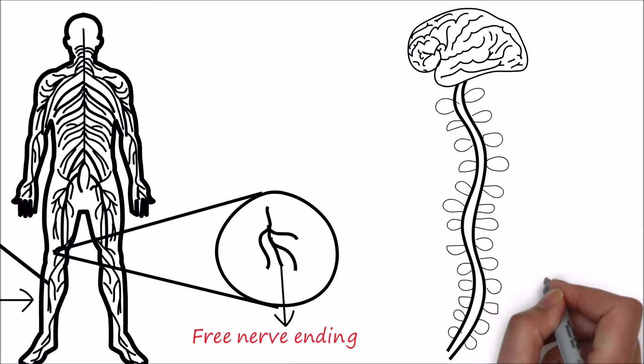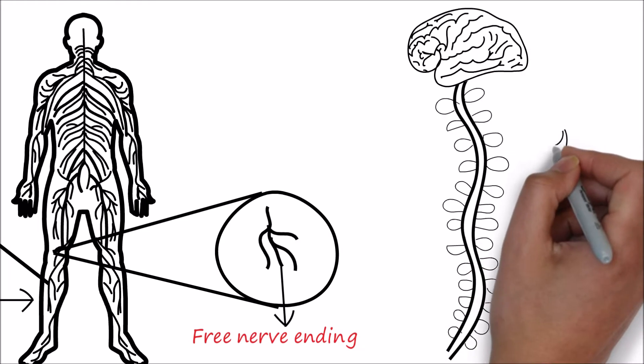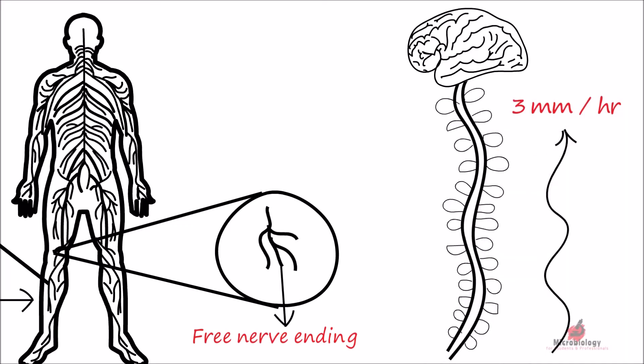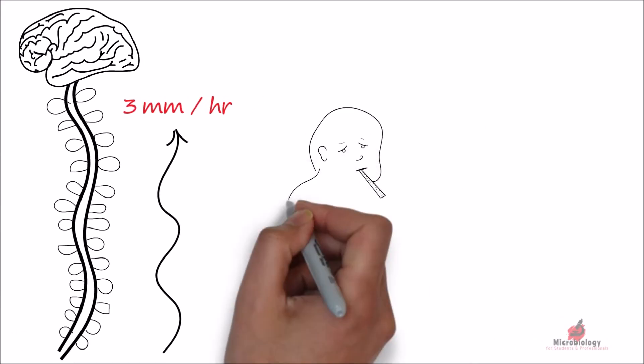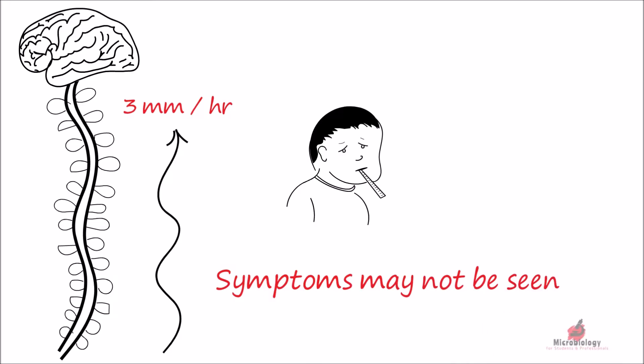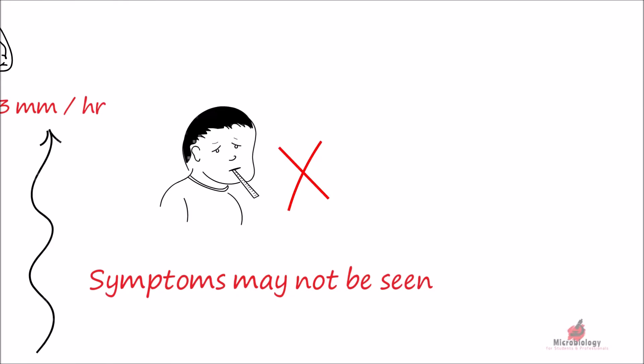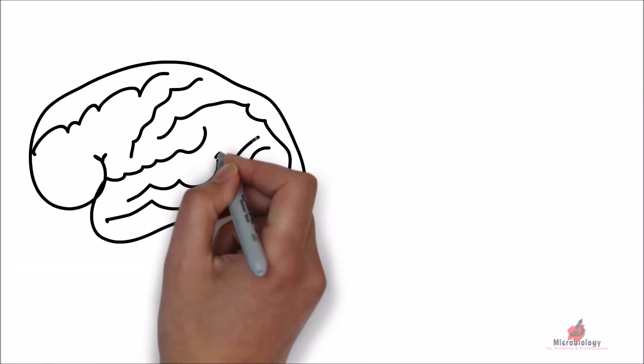The virus moves in the axon at a speed of three millimeters per hour by passive movement. At this stage, the symptoms may not be seen. The virus moves rapidly to the brain and there it multiplies.